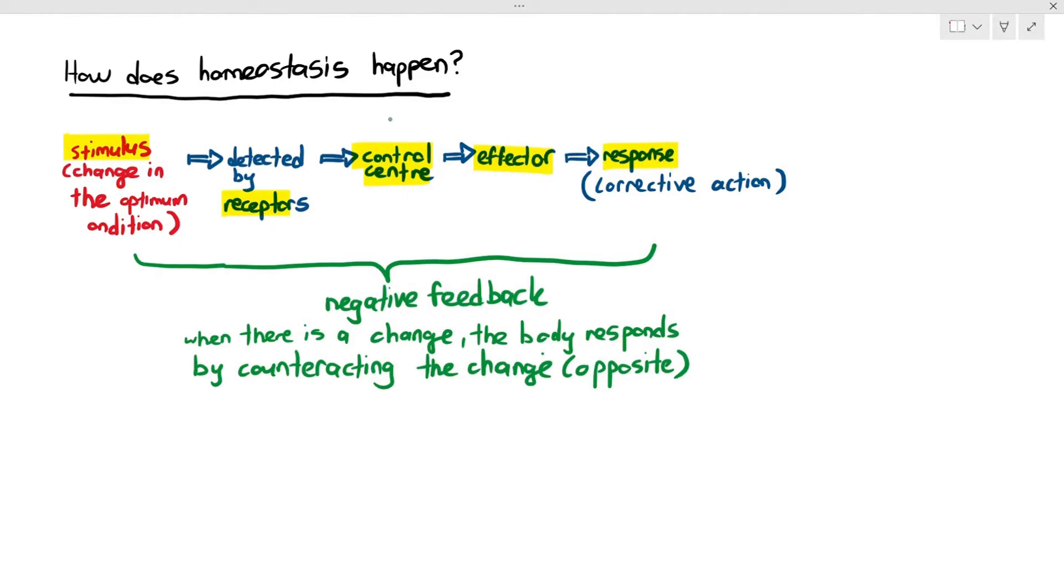As I've mentioned earlier, homeostasis is not just limited to controlling body temperature. We use homeostasis to control a lot of other things in our body. For example, the amount of water in your blood, it cannot be too high or too low. Or also the blood glucose concentration, it cannot be too high or too low as well. So for the first part of this video, you just have to generally be able to explain how homeostasis happens.